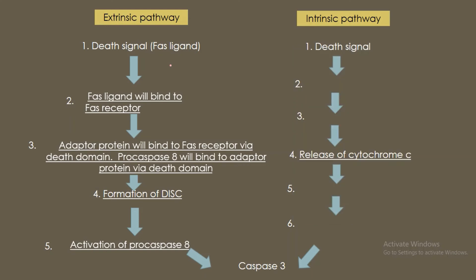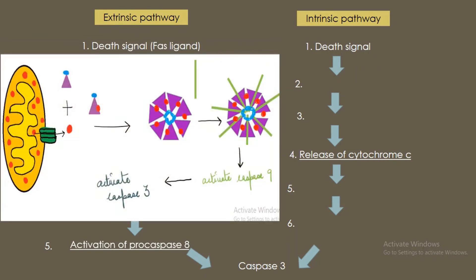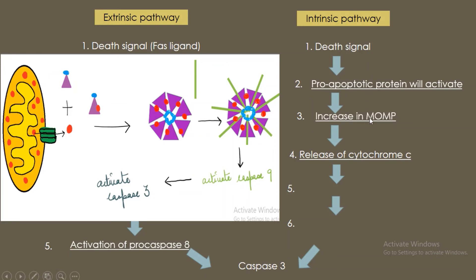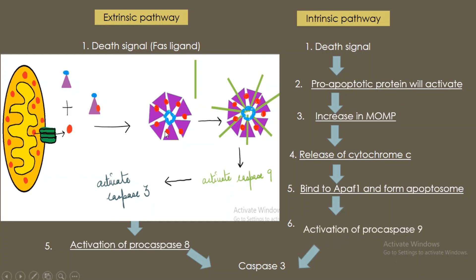Now we will look at the intrinsic pathway. Again, there is a death signal, which causes activation of the pro-apoptotic protein. This pro-apoptotic protein increases the permeability of the outer membrane of the mitochondria, leading to the release of cytochrome c from the intermembrane space into the cytoplasm. Cytochrome c then binds to the adapter protein called Apoptotic Protease Activating Factor 1 (Apaf-1), resulting in the formation of the apoptosome. The apoptosome causes activation of pro-caspase 9 — the initiator caspase — which then activates the executioner caspase 3.